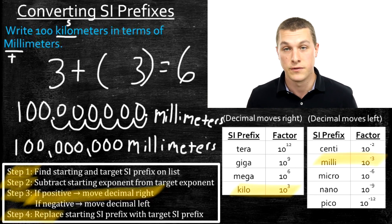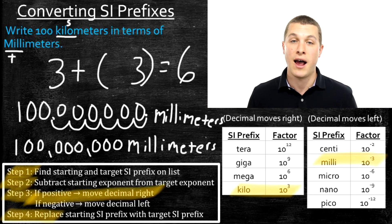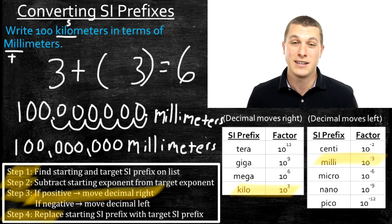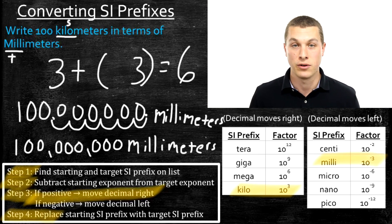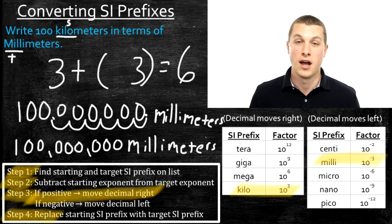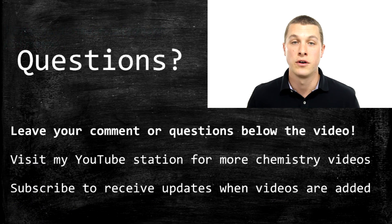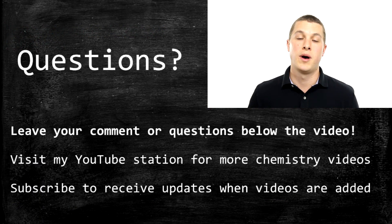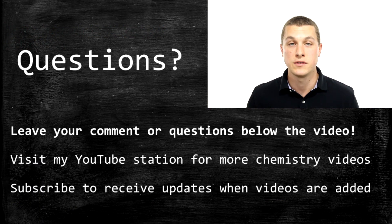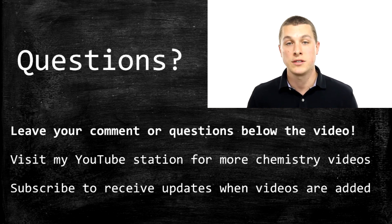Never forget what you're doing in this conversion process is just finding a different way to express the same distance — it's related to figuring out how many kilometers you traveled if you know how many miles you traveled; you're just doing a conversion between one type of measuring and another. That does it for this episode of Real Chemistry. Go to my YouTube page to see more videos on chemistry, subscribe, and leave any comments or questions below.